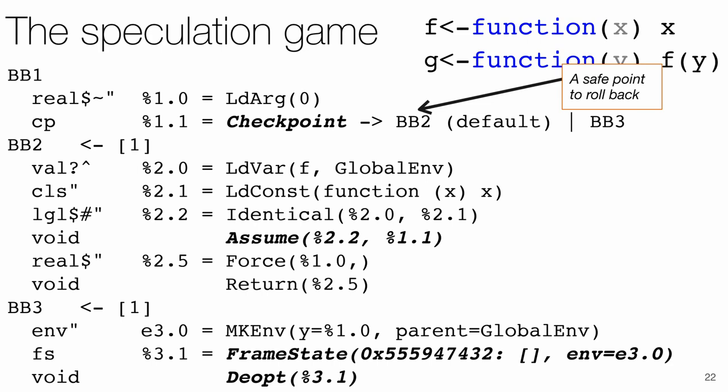First, there is a checkpoint instruction that marks a point to which a misspeculated execution can roll back. It is a branch that has a normal and a deoptimization jump. Second, the assume instruction takes a predicate and a checkpoint and acts as an assert for the predicate. After the assume, analyses can use the predicate for reasoning. The assume is later lowered to a branch on the predicate that can jump to the provided checkpoint's deoptimization target. We can't allow any side effects between a checkpoint and an assume.